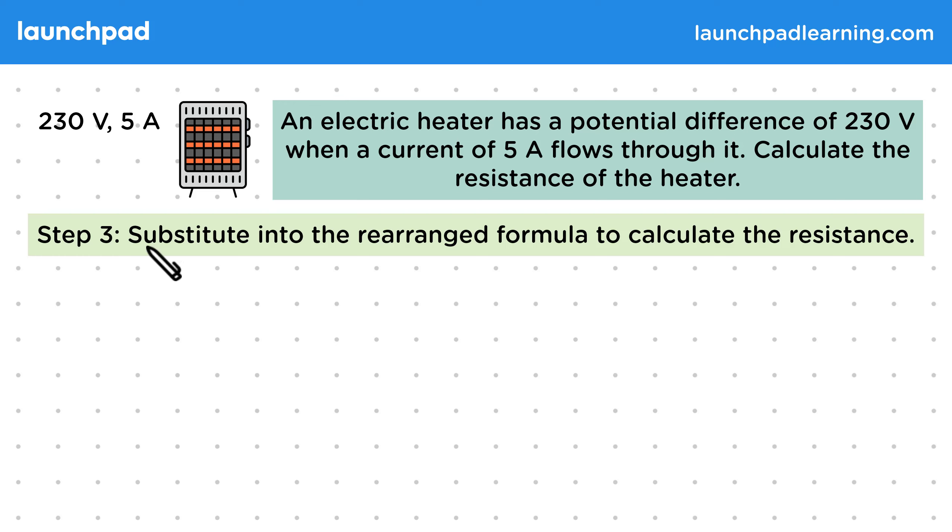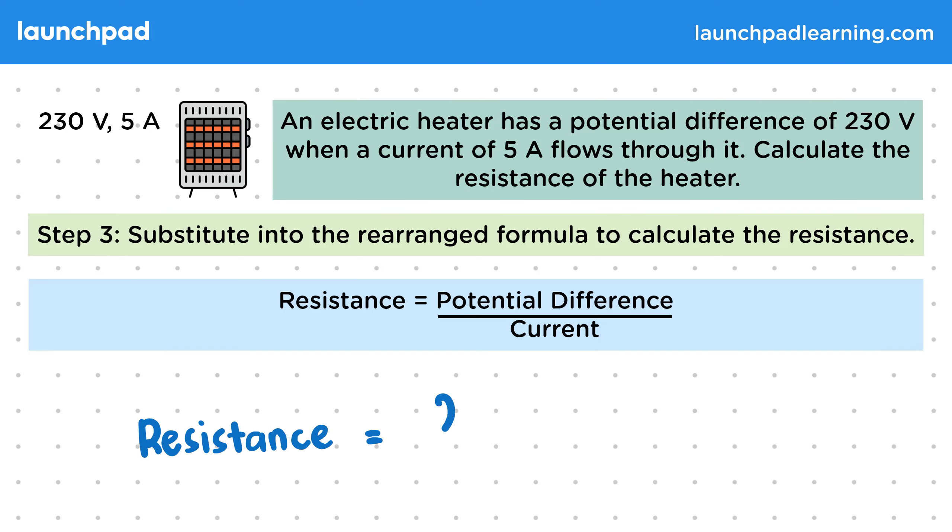Then for step 3, all we need to do is substitute into the rearranged formula to calculate the resistance. The resistance is equal to 230 volts divided by 5 amps. And that gives us 46 ohms of resistance.